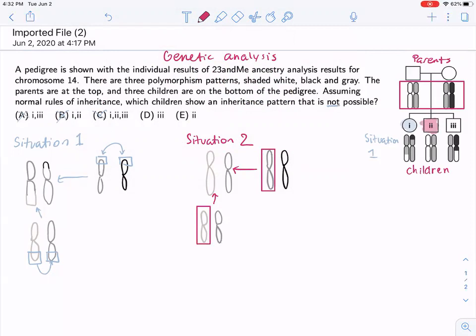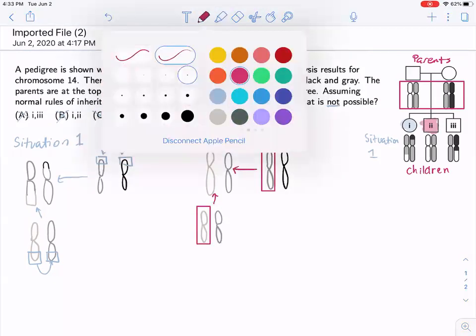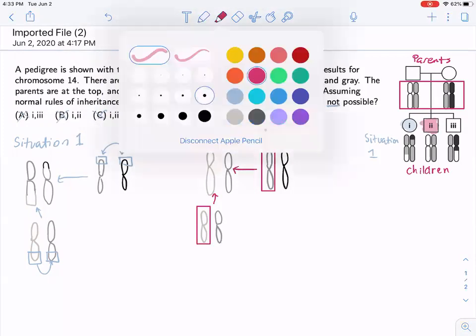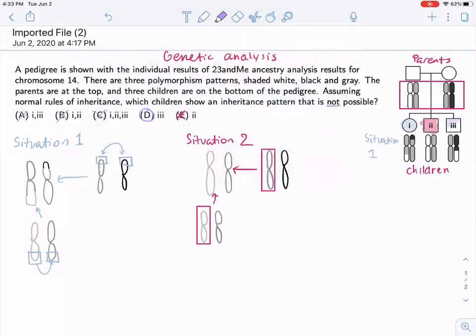And so anything that has situation two, we can say is not the correct answer. So this leaves us with situation three, and let's go and explain why. So the situation three is a fair answer. So let's go on and figure out why situation three is not possible.